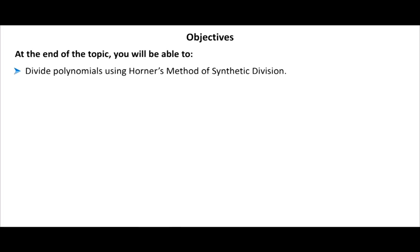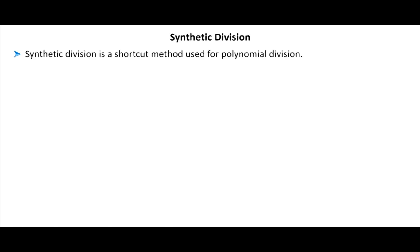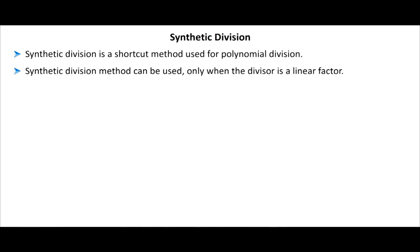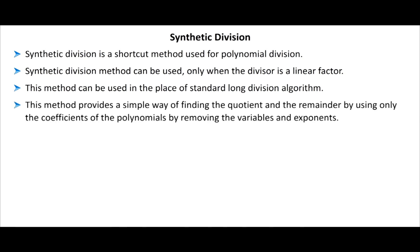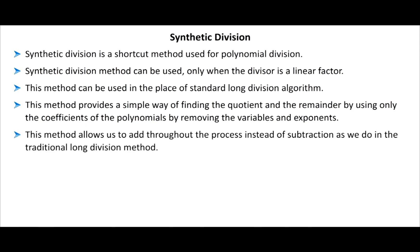At the end of the topic you will be able to divide polynomials using Horner's method of synthetic division. Synthetic division is a shortcut method used for polynomial division. This method can be used only when the divisor is a linear factor, in place of standard long division. It provides a simple way of finding the quotient and remainder using only the coefficients of the polynomials, removing variables and exponents, and allows addition throughout instead of subtraction.